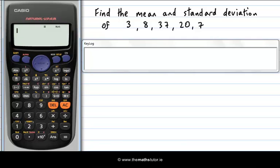First of all, you need to have it in stat mode. So I need to hit this mode button and it brings up a list of options. The default option is comp for computations. I want to select 2 for stat. Once I've selected 2 for stat, it brings up another list of options. I want the first one, which is 1 variable. So I hit 1.